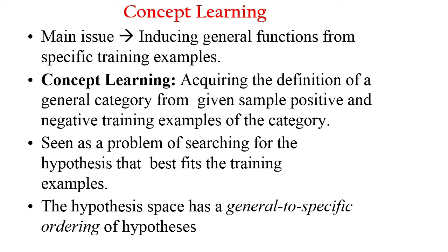Concept learning is acquiring the definition of a general category from given sample positive and negative training examples of that category. We need a definition of a general category that is applicable to both positive and negative training examples. It is seen as a problem of searching for the hypothesis that best fits the training examples. The hypothesis space has a general-to-specific ordering of hypotheses.